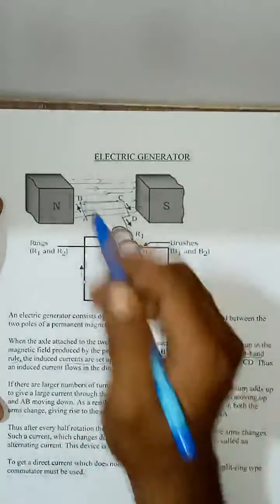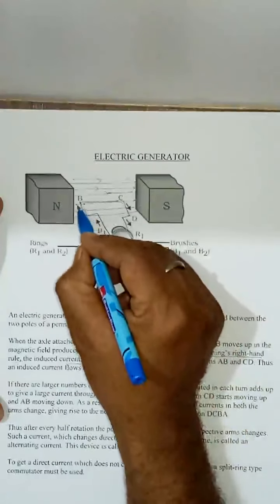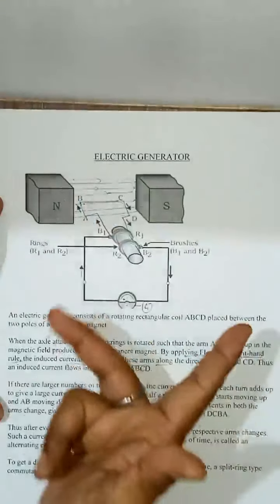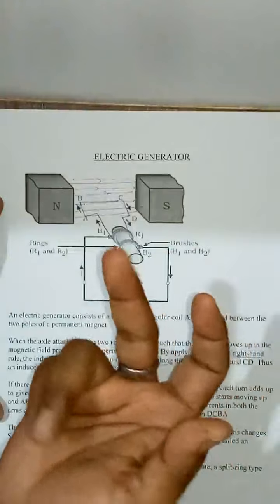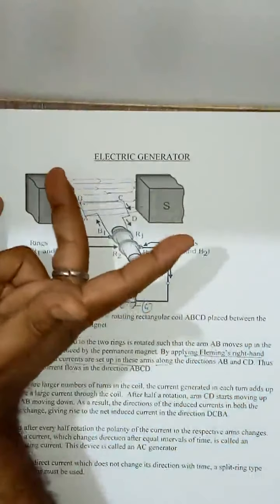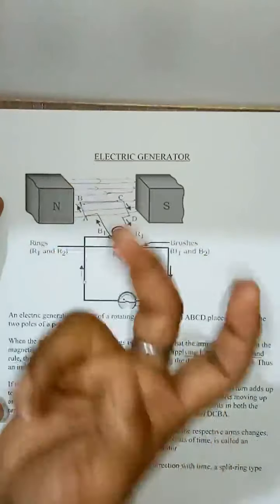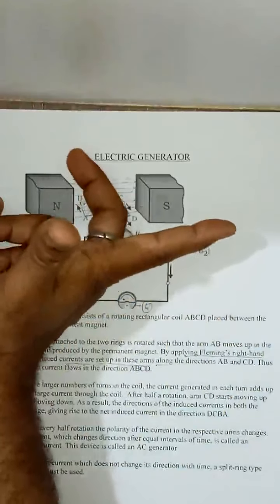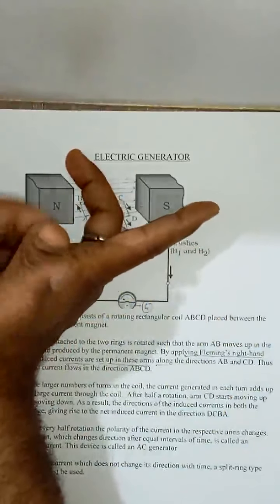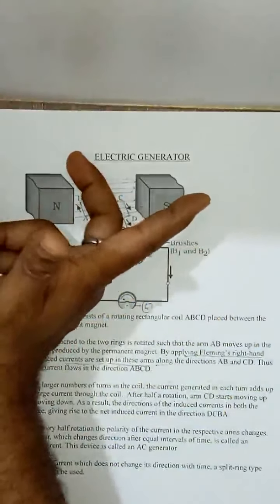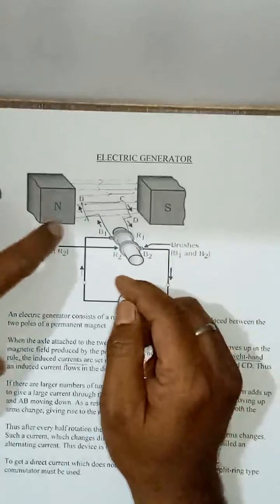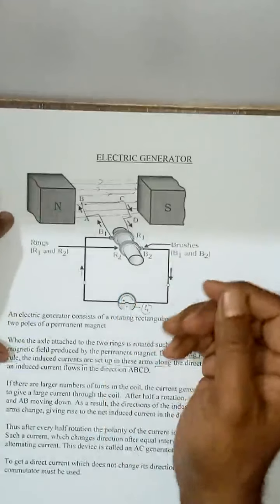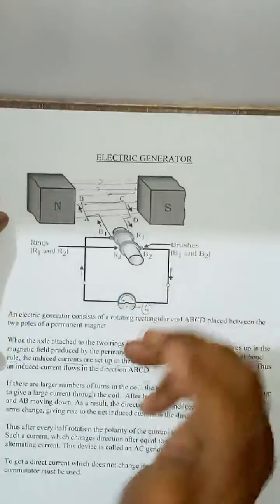For example here, within this wire current is going in this way. So see, this finger shows the induced current. This one shows the field line. So applying this right-hand rule, force will be in this way. This is what the Fleming's rule.